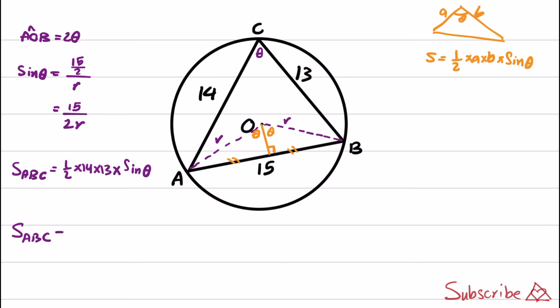S_ABC is equal to 13 times 14 times 15 divided by 2 times 2 times R. And if I take R to here and move S here, we have R, which is what the question tries to find, is equal to 13 times 14 times 15 divided by 4 times S_ABC. So if we can obtain the area of ABC, we can obtain the value of R.